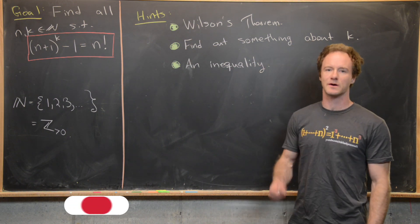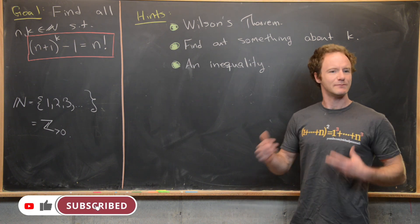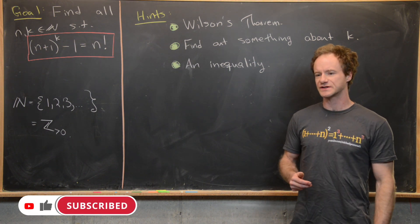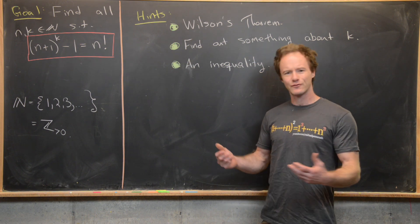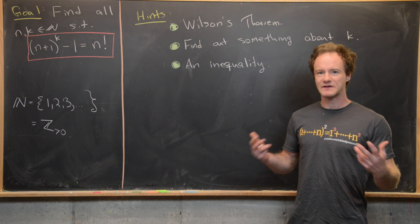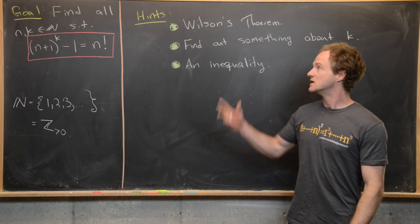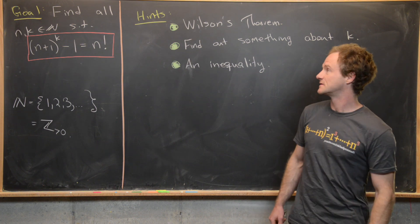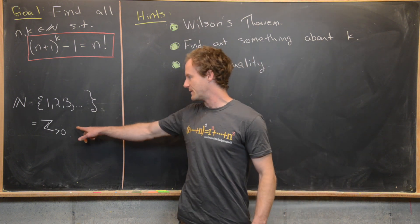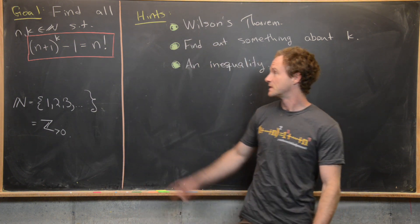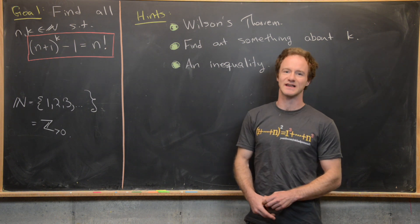Here we're going to look at a solution to a nice little number theory problem. I'm not actually sure where this came from — I keep notes of problems I find interesting and had this one written down without a source. So we want to find all natural numbers n and k, by natural numbers I mean positive integers, such that (n+1)^k - 1 = n!.